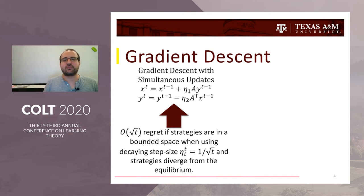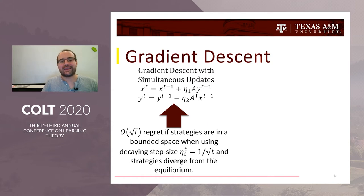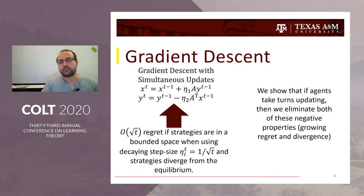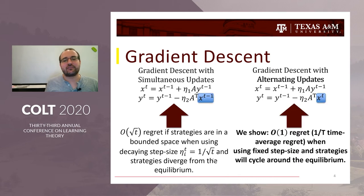Decaying step sizes are prohibitively slow in a lot of online optimization settings. Moreover, from a dynamics perspective, gradient descent with simultaneous updates actually diverges from the Nash equilibrium — doing exactly the opposite of what you want.